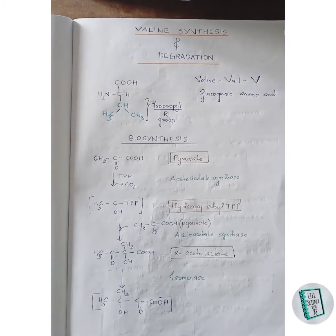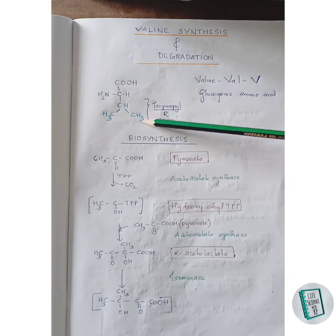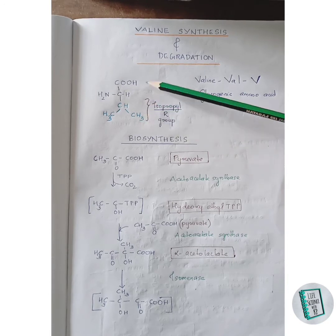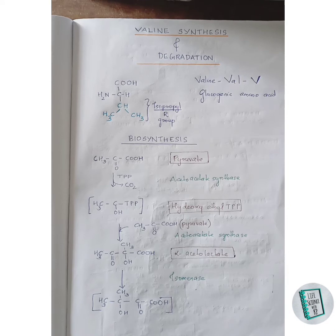Welcome to this video. Today we will be discussing the synthesis and degradation of valine. Valine is a branched-chain amino acid with an isopropyl R group in its structure. It is represented in three letters as VAL and in one letter as V. It is a glucogenic amino acid, as its degradation leads to succinyl-CoA. The synthesis of valine starts with pyruvate.